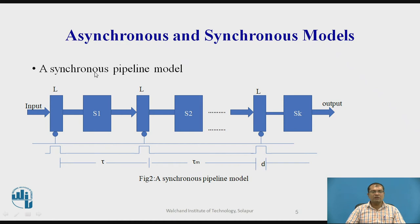So next model will focus on synchronous pipeline model. So here also we find the K number of stages. But the major difference is here latches are inserted between different stages. So these stages are made up of combinational circuits and each latch is going to act as a buffer.